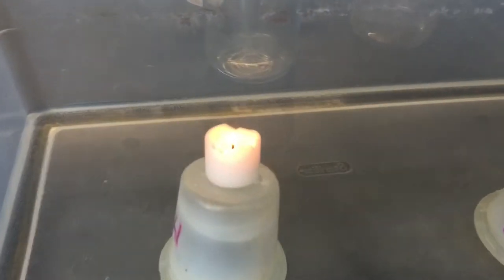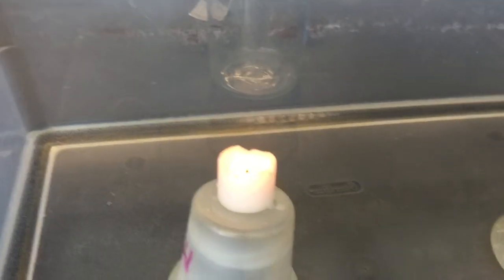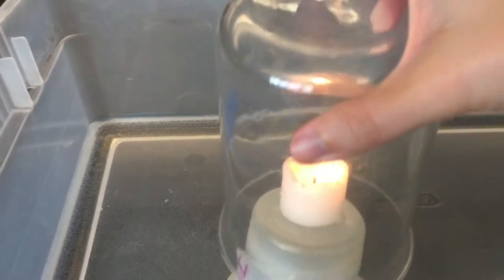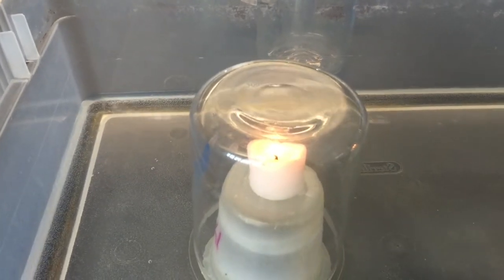So what I have here is a candle that has been lit. What I'm going to do is invert a beaker over the top of it so that it creates a seal. I'm going to measure how long it takes for it to go out.